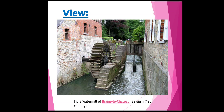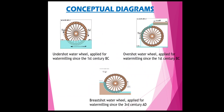This is a figure of a water mill from Belgium in the 12th century. This is a diagram showing undershot, overshot, and breastshot water mills from different centuries.